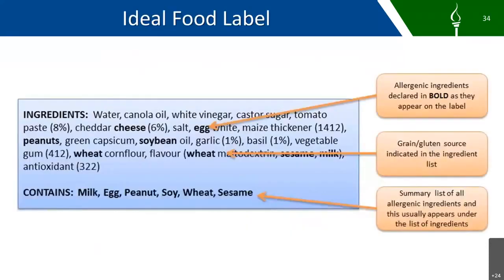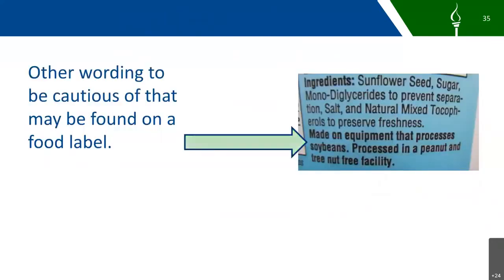Here would be an example of an ideal food label. All of the allergenic foods would be in bold so they would stand out for you, and it would also list every food allergy in the 'contains' statement at the bottom — this one also lists sesame. Some other wording to be cautious of on a food label would be looking for where the food was made or manufactured. This food label says the food was made on equipment that also processes soybeans, and it was processed in a peanut and tree nut free facility — so that would be good to know as well.